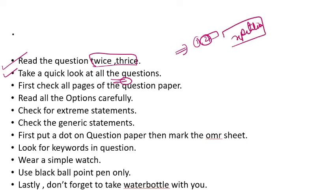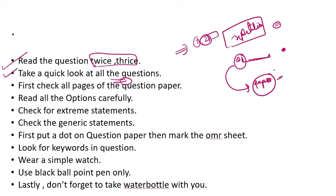In one form there may be a repeated question. If a student has read a question once but doesn't fully know the answer, they may just take a guess and fill the OMR. But sometimes the same concept can be presented in another form elsewhere in the paper, and that helps you solve it. Two identical or similar concept questions can appear in the paper.